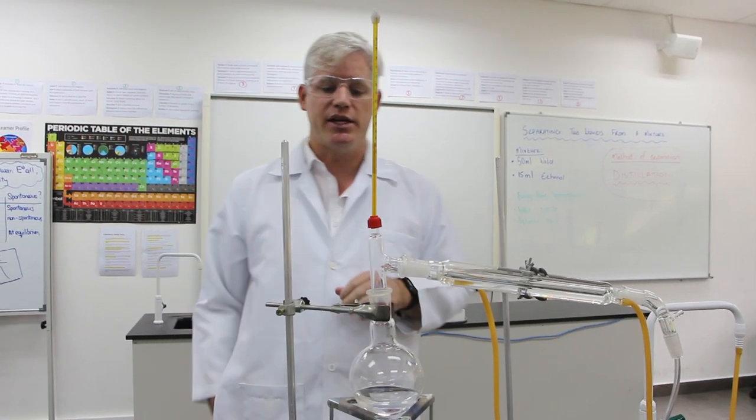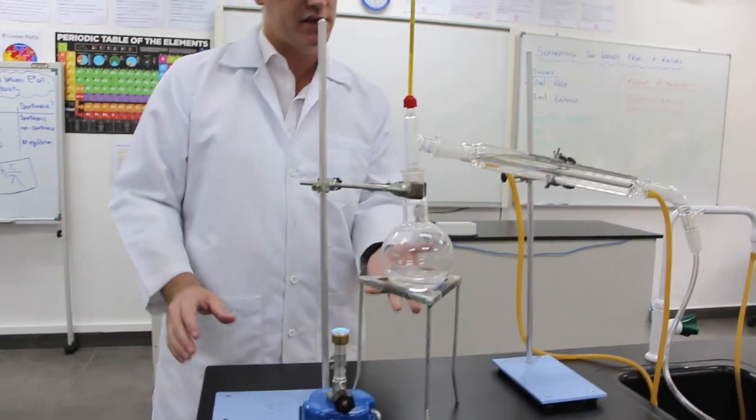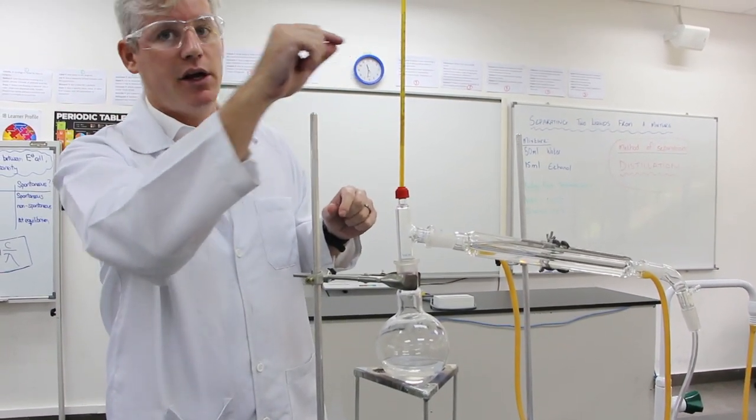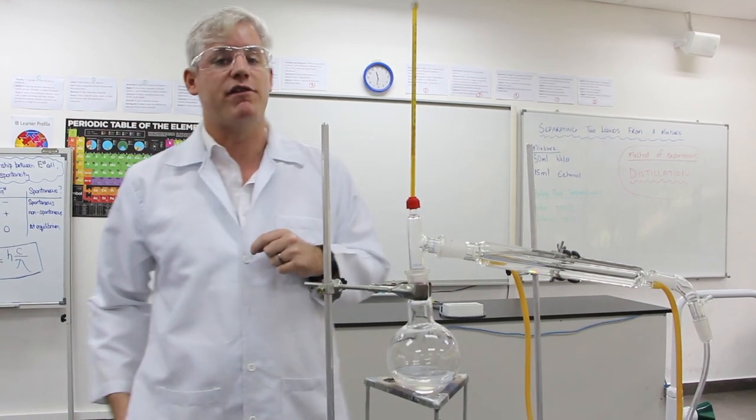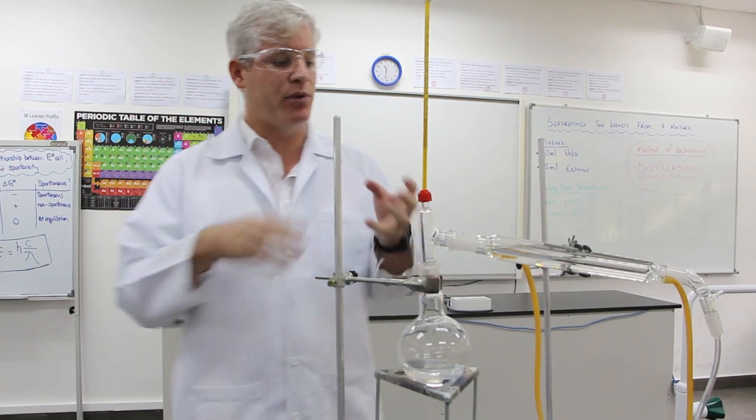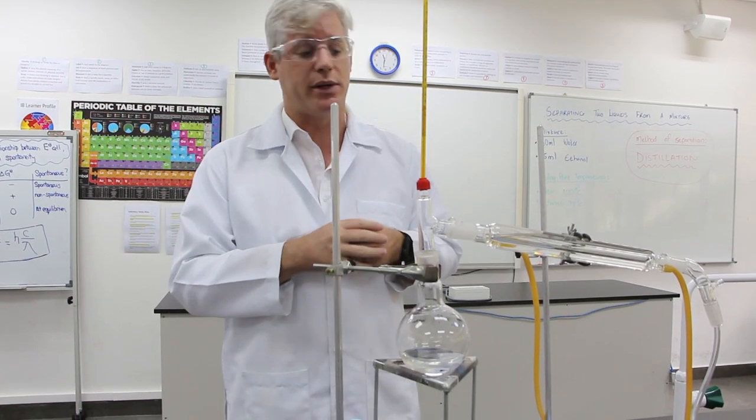So what's going to happen here is we're going to put the Bunsen burner underneath this solution to heat it up. As we see the temperature rising, the ethanol will start to evaporate when it gets closer to 78 degrees. As it evaporates, it turns into a gas.